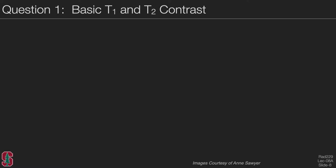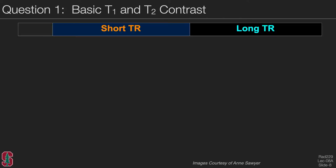Given the sequence, let's think about the parameters that give us basic contrast effects. Note these are no different whether you have a spin echo or not; however, the spin echo is much more commonly used. We will fill out a chart based on the choice of TR and TE, and at each point consider what kind of contrast you will get.